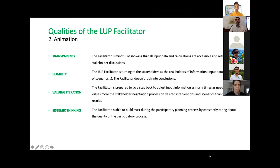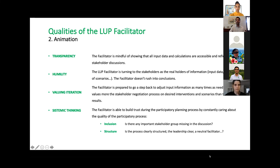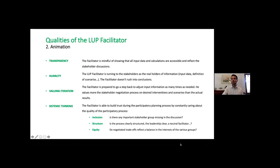We constantly care about three principles. Inclusion: constantly asking ourselves whether any important stakeholder group is missing from the table. Structure: is the process clearly structured, is the leadership clear, is there a truly neutral facilitator? And equity: at the end, are there negotiated trade-offs that really reflect a balance of interests among the various groups, or does it only benefit one group while the others are not considered?